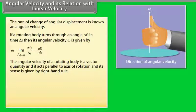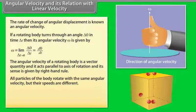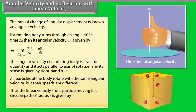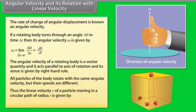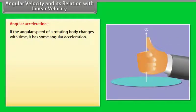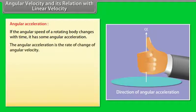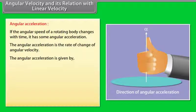The rate of change of angular displacement is known as angular velocity. If a rotating body turns through an angle Δθ in time Δt, then its angular velocity ω is given by ω = limit(Δt→0) of Δθ/Δt = dθ/dt. Angular velocity is a vector quantity; it acts parallel to the axis of rotation and its sense is given by the right-hand rule. All particles of the body rotate with the same angular velocity but their speeds are different.